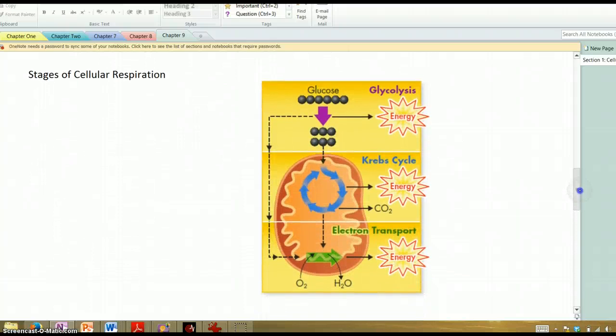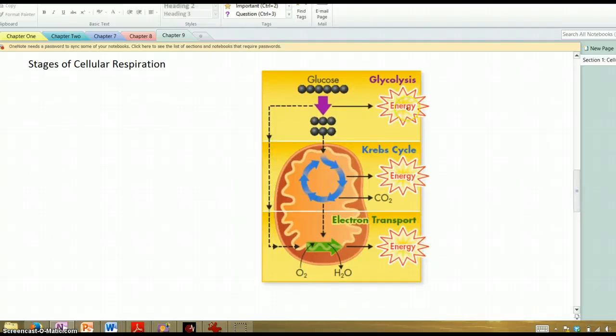Alright, stages. Now, this is just sort of the overall look at cellular respiration. We're going to look at some of the details of these steps later. But there's three primary steps in cellular respiration: glycolysis, Krebs cycle, and electron transport, which, as we'll see, is very similar to what happened in photosynthesis. Now, the organelle that's involved here is the mitochondria. That's the membrane-bound organelle that does cellular respiration. You'll notice the first step, glycolysis, happens outside the mitochondria, but then the Krebs cycle and electron transport chain happen inside the mitochondria.